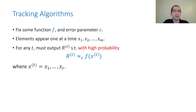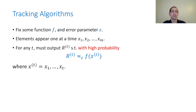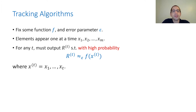In this talk we formally discuss tracking algorithms, which are streaming algorithms that continuously return some kind of output. We fix a function f and an error parameter epsilon. Elements appear one by one — first x1, then x2, and so on — and the algorithm should output some value r_t that is with high probability a good approximation of f evaluated on the first t stream elements.